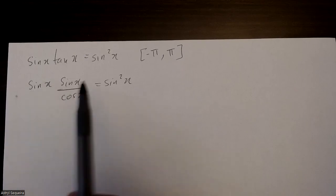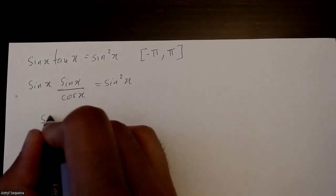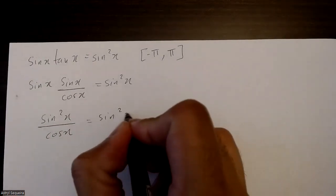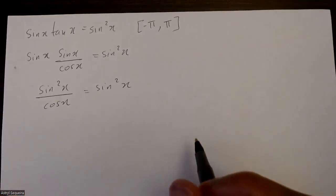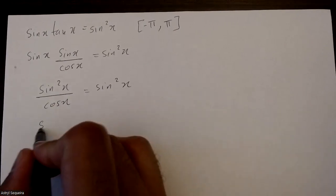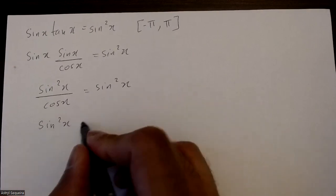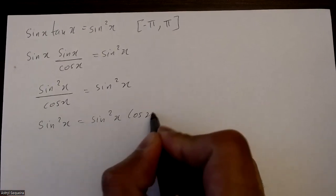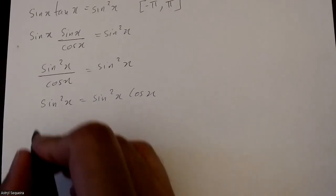The next thing I want to do is just multiply these two sines on the top here, so it's going to be sine squared x over cos x equals sine squared x. And then I'm going to multiply the cos on the other side because I don't like having trig terms in my denominator. Now I can bring it all to one side.